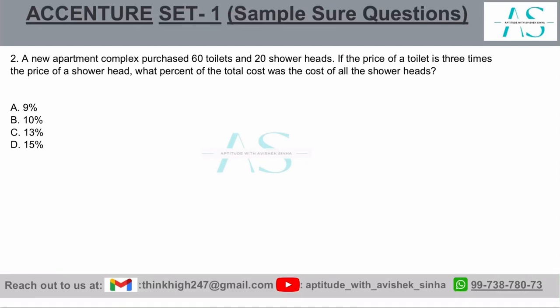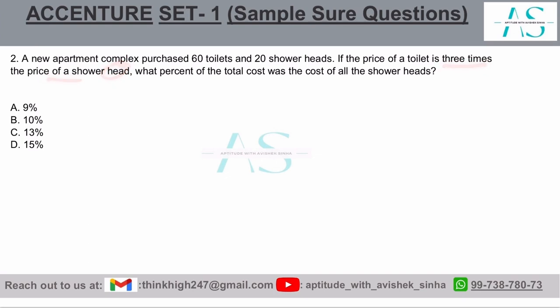A new apartment complex purchased 60 toilets and 20 shower heads. If the price of a toilet is three times the price of a shower head, what percentage of the total cost was the cost of all shower heads?